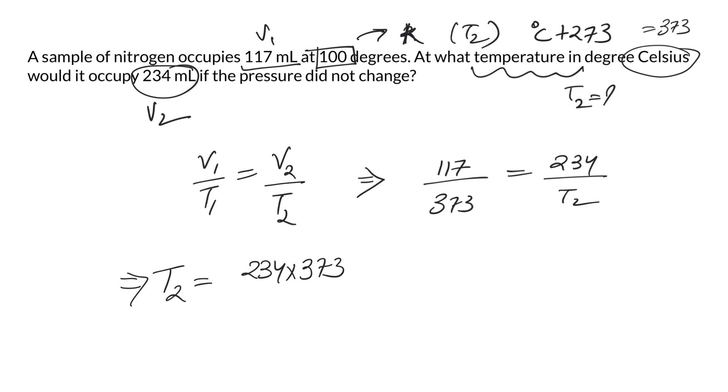If you just subtract the 273, you get 473 degree Celsius. That's your answer. It's really fun and easy to understand these two gas laws.